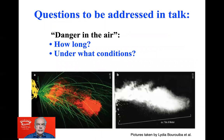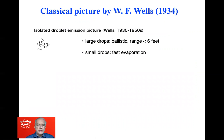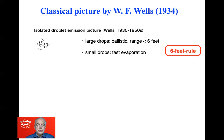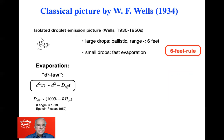The question to be addressed in this talk is: how long is there danger in the air, and under what conditions? The classical picture on this is by Wells, developed in the 1930s. His picture is an isolated droplet emission picture. He argued that large drops would be mainly ballistic and fly less than six feet, whereas small drops would quickly evaporate. This would support the six feet rule, which is now commonly applied for social distancing, based on the so-called D-squared law.